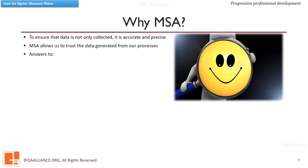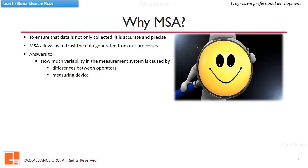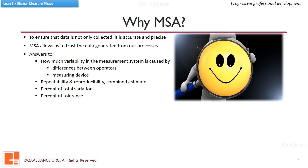The study can answer questions like: How much variability in the measurement system is caused by differences between operators? How much variation is caused by the measuring device? What is the gauge repeatability and reproducibility? What is the combined estimate? What percent of total variation is due to measurement? What percent of tolerance has variation due to measurements? Whether the measurement system is capable of discriminating between different parts or not?